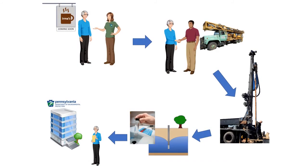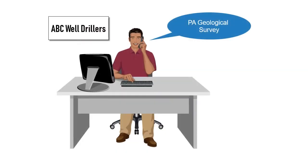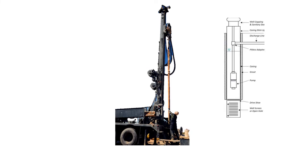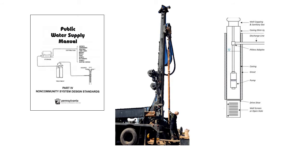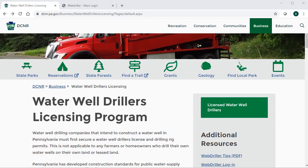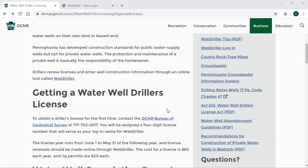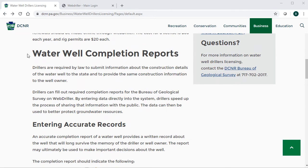The third step is for the well driller to drill and construct the well. The driller is required to contact the Pennsylvania Geological Survey with a notice of intention to drill. The driller, or the applicant on behalf of the driller, should contact DEP staff at the same time. The licensed driller then drills and constructs the well according to the construction standards in the Public Water Supply Manual, Part 4, Non-Community System Design Standards, which are summarized in Module 1. The well driller is required by the Pennsylvania Water Well Drillers License Act, which is Act 610, to complete a water well completion report.